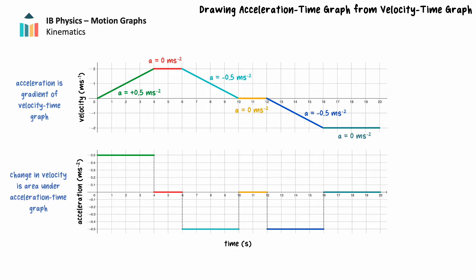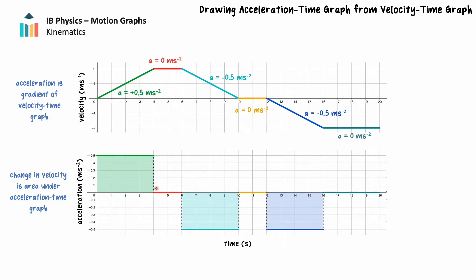When the object has positive acceleration, the change in velocity is positive — the area bounded by the graph and the time axis is above the time axis. When the object has negative acceleration, the change in velocity is negative — the area bounded by the graph and the time axis is below the time axis. When the object is not accelerating, its velocity does not change and there is no area bounded by the graph.